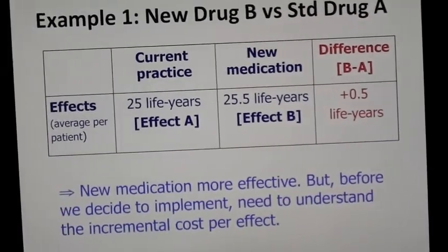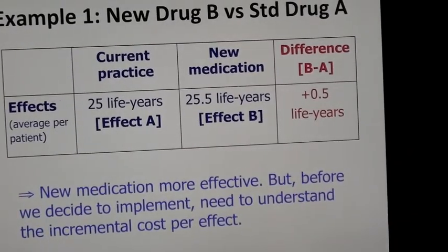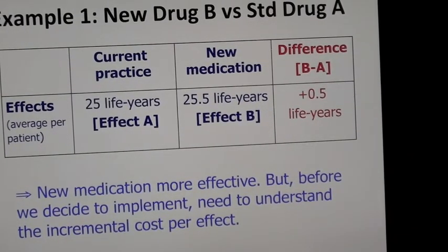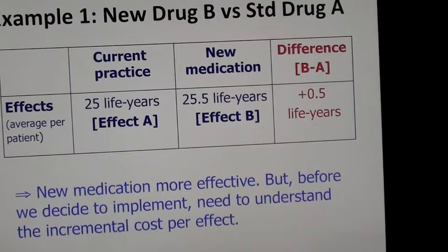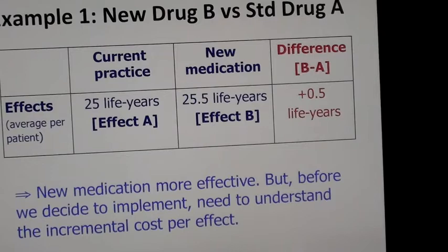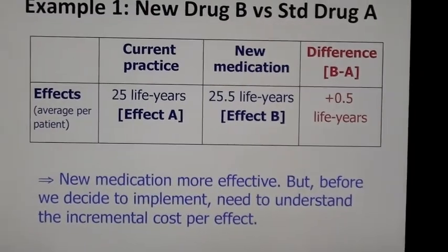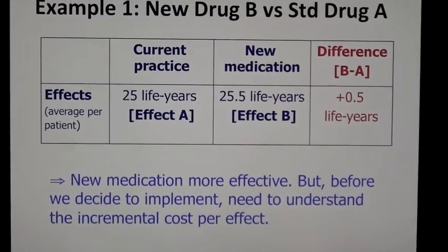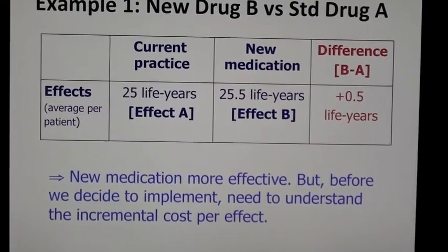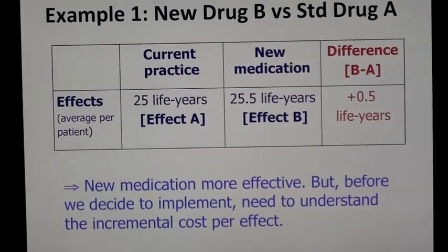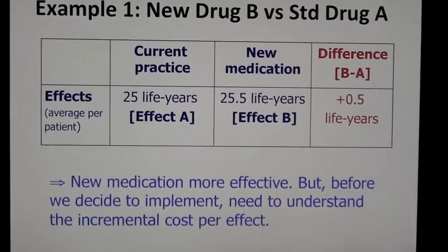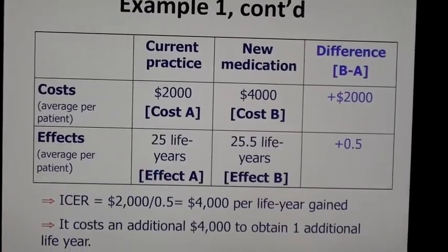Here we have an example of a new drug B versus standard drug A. We know that the drug imparts an extra half year of life, and many hospitals would want to make a decision on that drug. However, it's very difficult to decide whether drug B is worth it because we don't have the costs associated with it.